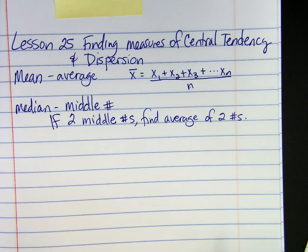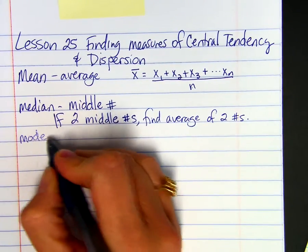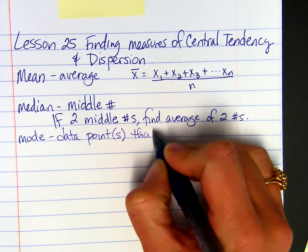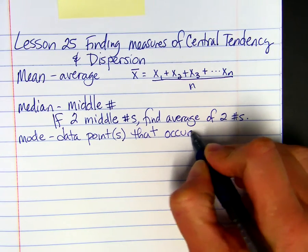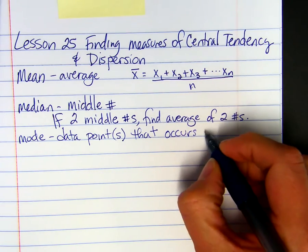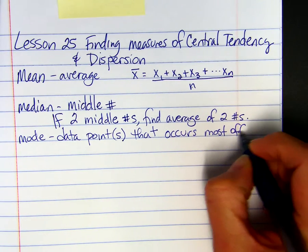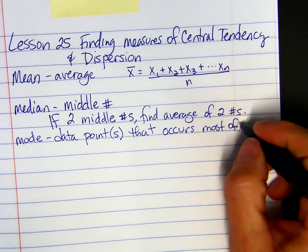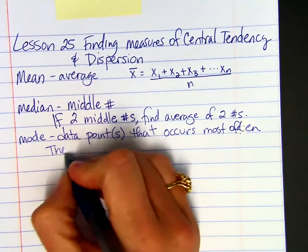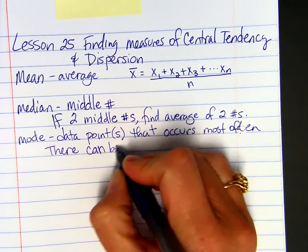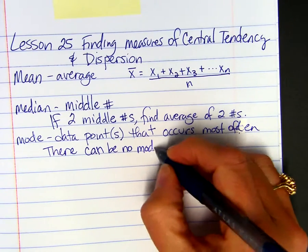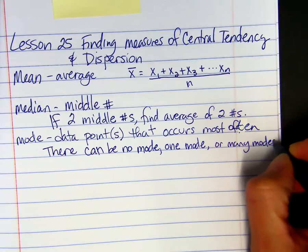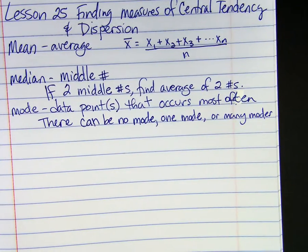The mode, you may have more than one. It's the data point that occurs most often. So there can be no mode if they all occur at the same frequency, there may be just one mode, or there may be many modes, which two modes counts as many. So there can be two or more.